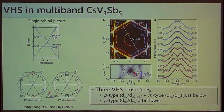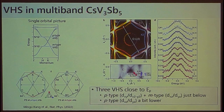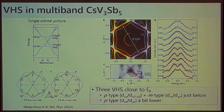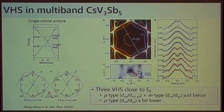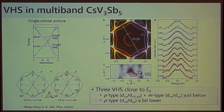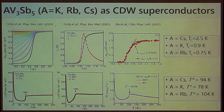Some ARPES work — this is an example by Ricardo Comin's group looking at the cesium vanadium-3-antimony-5 variant — shows the band structure in the kz=π plane. They find almost perfect nesting between the endpoints of the Brillouin zone. As they cool the system down, they see a partial gap opening at those endpoints, corresponding to the onset of CDW order. There are a number of different Van Hove points identified: some are the so-called p or pure type, and a second class called the m or mixed sublattice type.